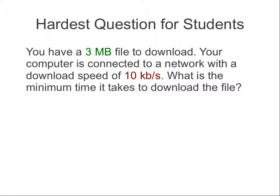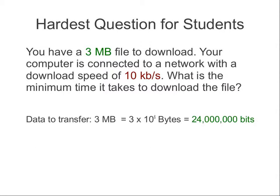3 megabytes — how many bits? 24 million bits. Mega means million, or 10 to the power of 6. And 1 byte equals 8 bits, so the uppercase 'B' means 8 bits. So 3 megabytes equals 24 million bits that you want to download — the data to transfer is 24 million bits.